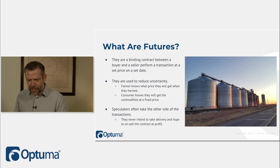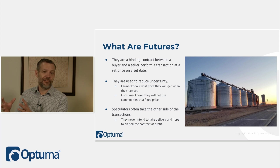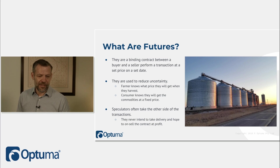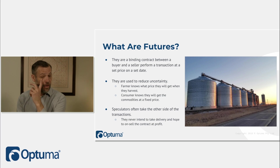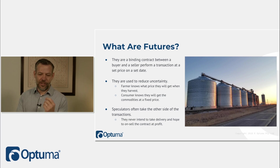In between the producers and consumers, we often have speculators who take the other side of transactions. They do it not because they ever expect to take delivery of the commodity, but purely to make money through speculation. They also provide liquidity — even if there's no commercial buyer, speculators will take the contract from the farmer with the intention to on-sell it to consumers later.